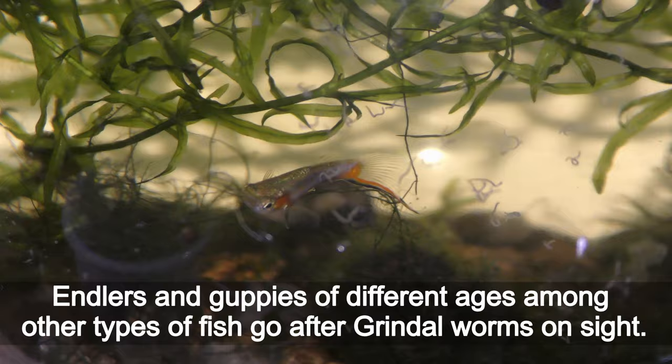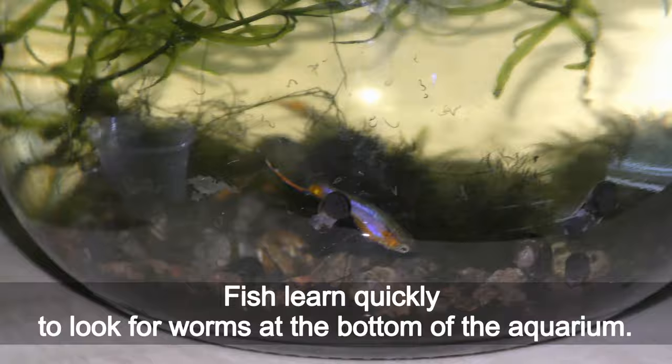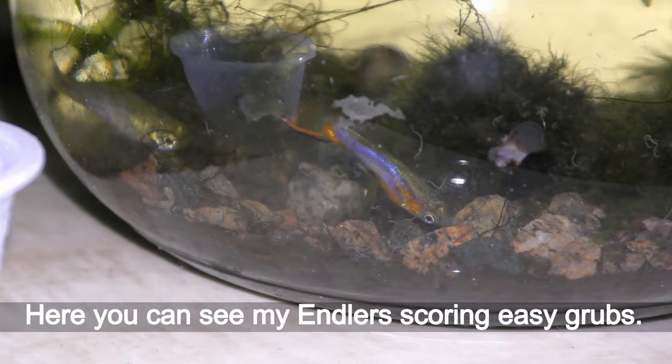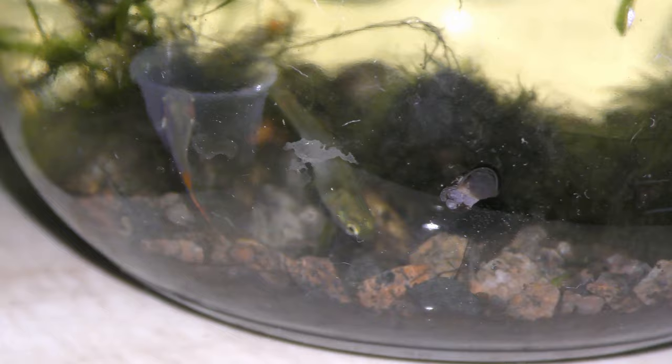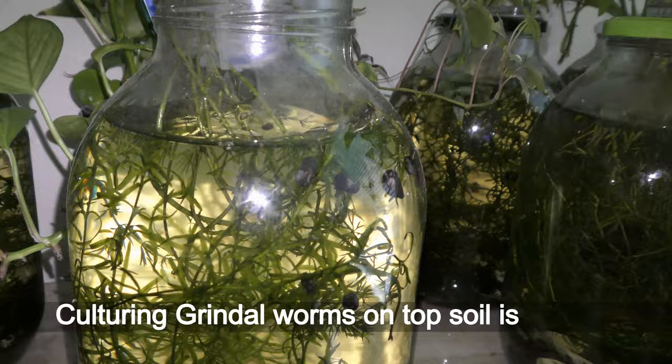Endlers and guppies of different ages, among other types of fish, go after grindal worms on sight. Fish learn quickly to look for worms at the bottom of the aquarium. Here you can see my Endlers scoring easy grabs. Grindal worms are the favorite food for my fish. Let's give them some more worms.